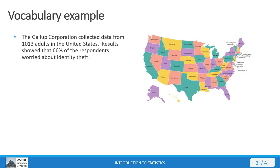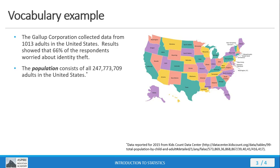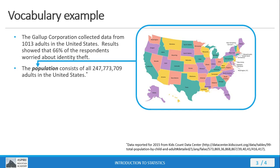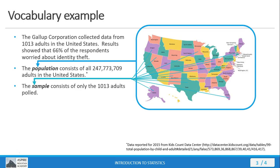This distinction between a population and a sample is fundamental in statistics. Let's take a look at an example. The Gallup Corporation collected data from 1,013 adults in the United States. Results showed that 66% of the respondents worried about identity theft. In this example, the population is the entire set of adults in the United States — all 250 million or so of them. But the sample is only the 1,013 adults that were polled. Here we see that the sample is a portion or subset of the population.